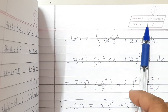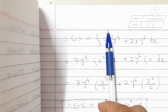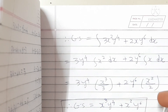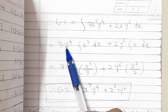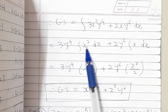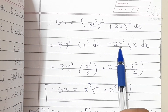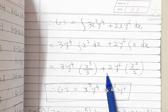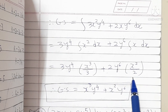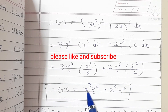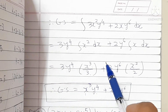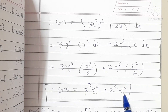The general solution formula is: ∫M dx (treating y as constant) + ∫(terms in N with no x) dy = C. Keeping 3y⁴ constant: ∫x² dx + 2y⁶ ∫x dx = 3y⁴ · x³/3 + 2y⁶ · x²/2. Cancelling gives the general solution: x³y⁴ + x²y⁶ = C.